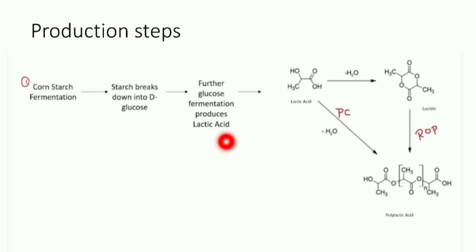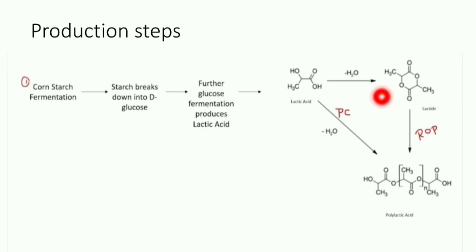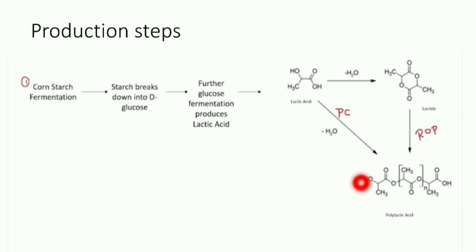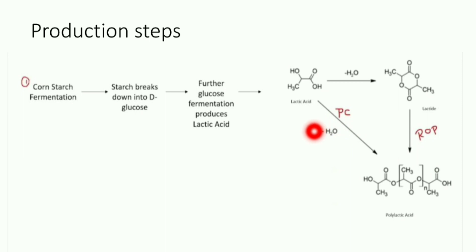The lactic acid produced then goes into two phases. First, it can form an intermediate known as lactide, and then by ring opening of this lactide, it can form PLA. Alternatively, lactic acid can be directly converted to polylactic acid via polymer condensation with the removal of water. So lactic acid to polylactic acid undergoes two different pathways.